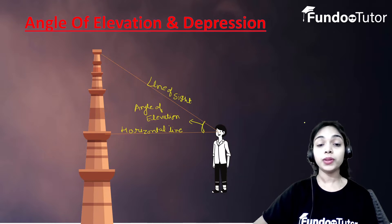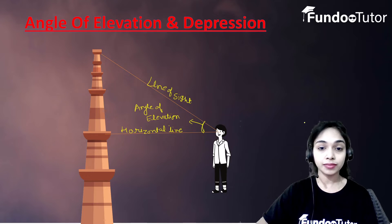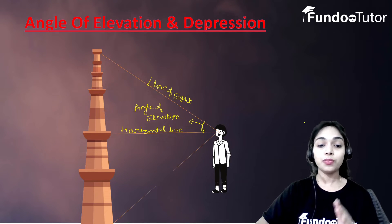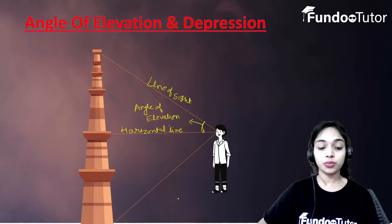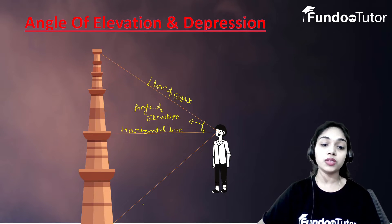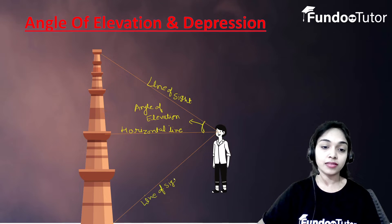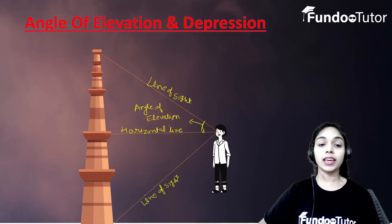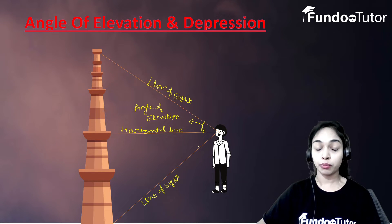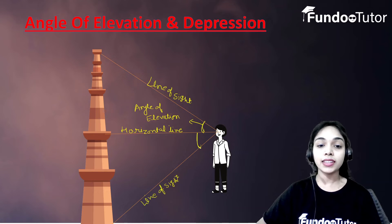Now what would be the line of sight when the person is looking at the bottom of this manar? When the person is looking at the bottom of this manar, the line drawn from the eye to the bottom of this manar is called the line of sight. In this case, the line of sight makes some angle with the horizontal line, and this angle is called the angle of depression.